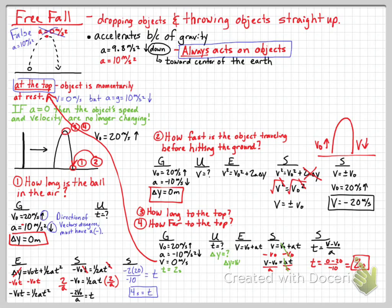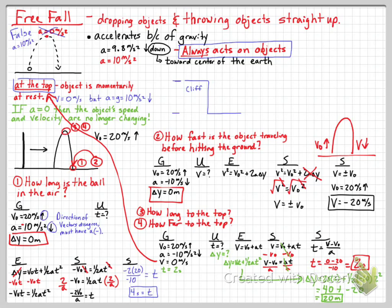Now solving for height: using time = 2 seconds and the equation Δy = v₀t + ½at², we plug in 20 m/s for v₀, 2 s for t, −10 m/s² for a: Δy = (20)(2) + ½(−10)(2²) = 40 + (−20) = 20 meters. The object goes 20 meters into the air.